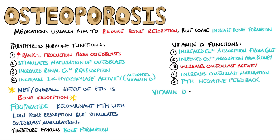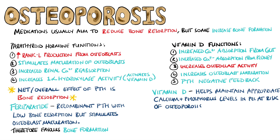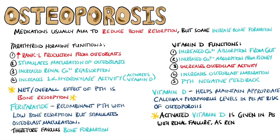Finally, we have vitamin D itself, which is very commonly given to help support patients at risk of osteoporosis. You may be thinking, why would you give vitamin D if it increases osteoclast activity? Well, similarly to parathyroid hormone, it does have effects on both bone resorption and bone formation. But remember that vitamin D also really helps in maintaining appropriate calcium and phosphorus levels in those at risk of osteoporosis, which is why it plays a big role in osteoporosis management. Remember that activated vitamin D must be given to patients with renal failure because they can't activate it themselves.